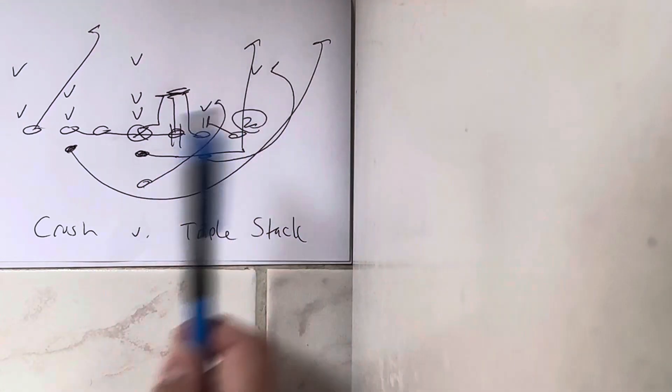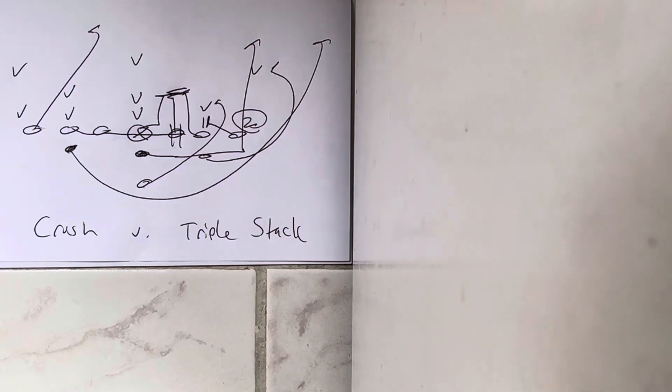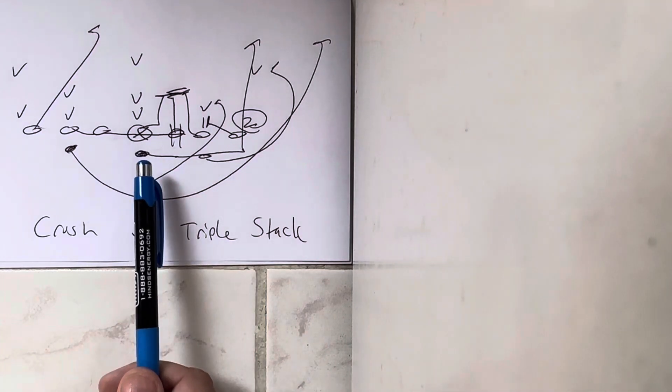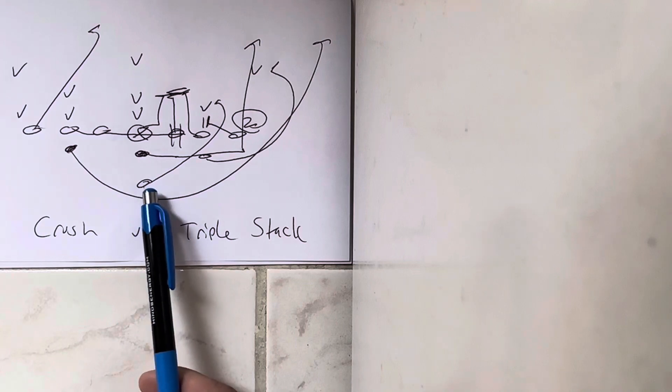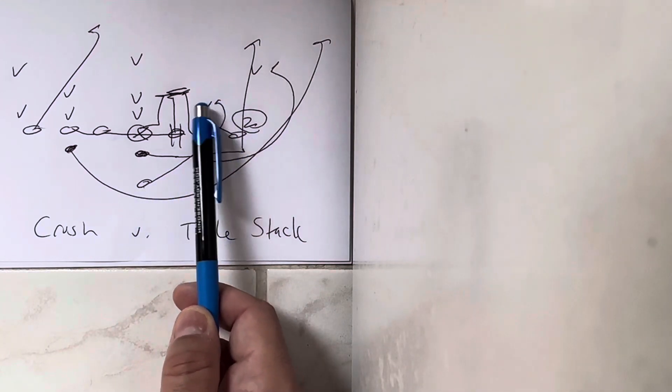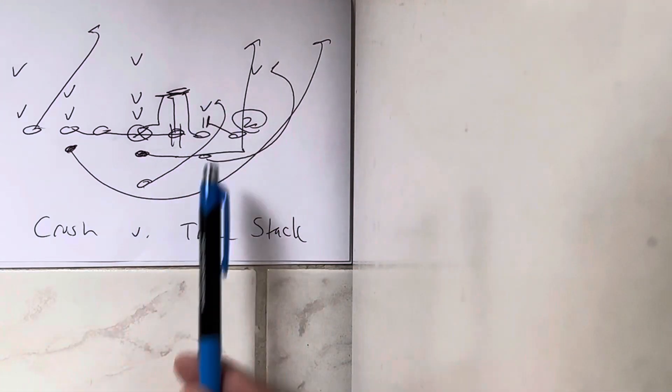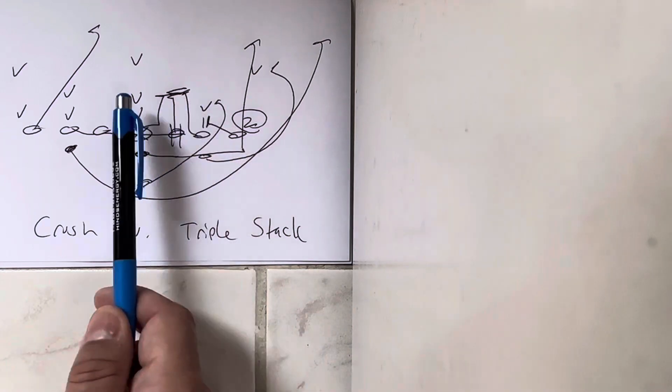The quarterback's going to take the snap, he's going to jump in the play side A-gap. The B-back is going to go off the receiver's block, turn up, and he's going to block the Mike. Because that's the Mike, by definition a triple stack defense is a two Mike defense.